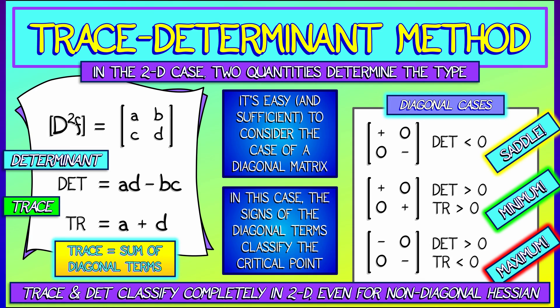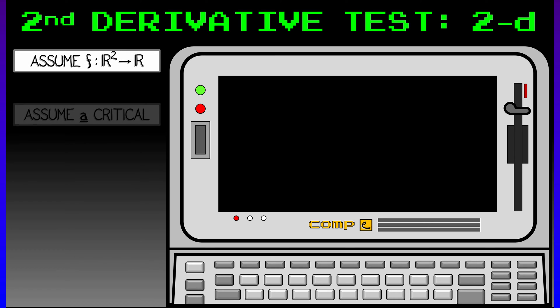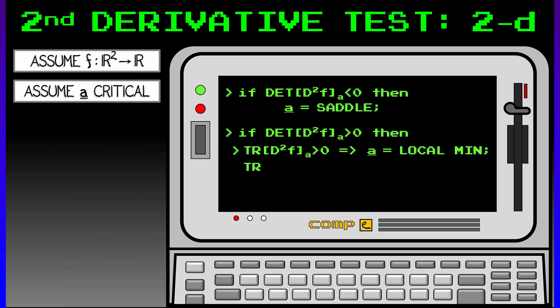That's the idea. Let's formalize this in terms of an algorithm that you can apply when you're working with a max min problem in 2D. Assume that you've got a critical point for a function two inputs, one output. Negative determinant, you've got a saddle. Positive determinant, now you have to compute the trace. If the trace is positive, you have a local min. If the trace is negative, you have a local max.